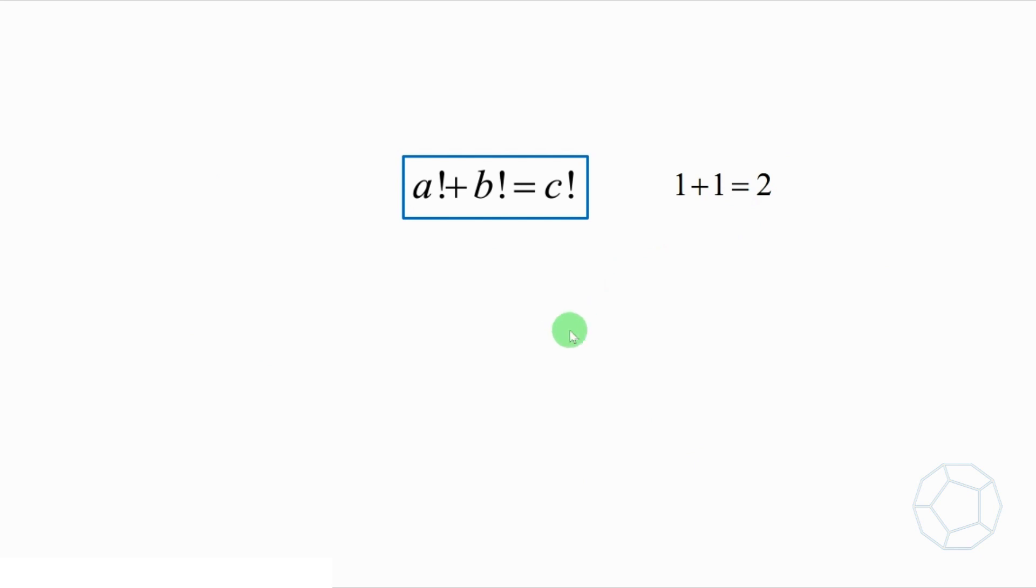So how about the solutions of the equation a factorial plus b factorial plus c factorial equals d factorial? More generally, how to solve the sum of factorials equals a single factorial like this? If you want to know more interesting problems in number theory, please check out the videos and playlists shown on the screen and in the descriptions below. See you in the next video.